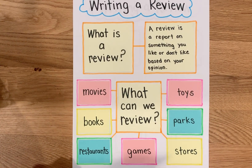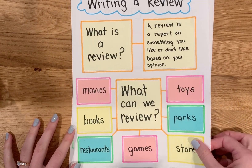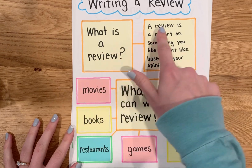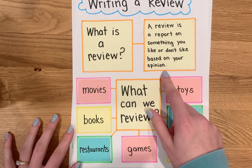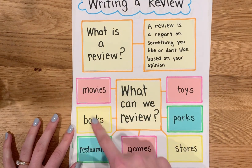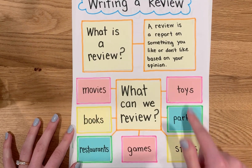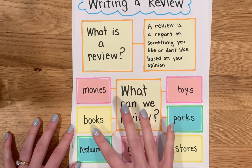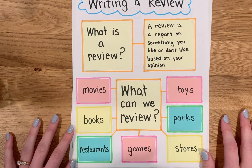Last time we talked about what a review is and how to start thinking about our review topics. A review is a report on something you like or don't like based on your opinion. Here are some of the things that we can review — this list doesn't include everything, just some ideas to get you started, like your favorite movies, books, and games.